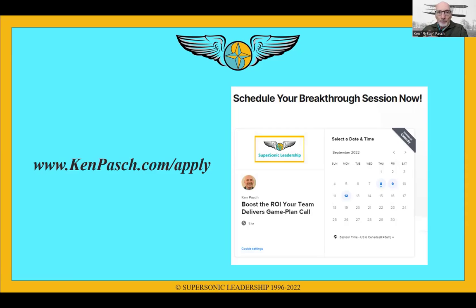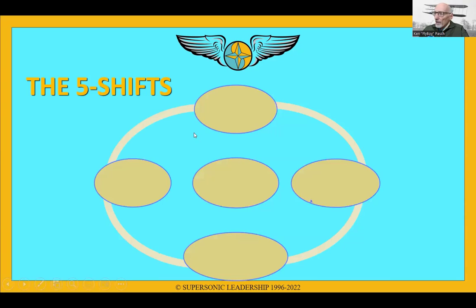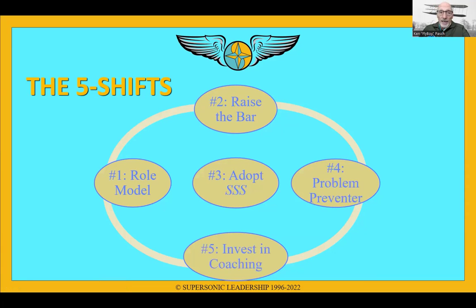Let's go back to the Team ROI gauge: where you are, where you'd like to be, and what it's going to take to get there. How are you going to know you got there? Does this fit into the discussion about the five shifts? Number one is be the role model, then raise the bar, then adopt the soaring success system, then be a problem preventer, and then invest in coaching. Five shifts. Everything I do fits into these five shifts.